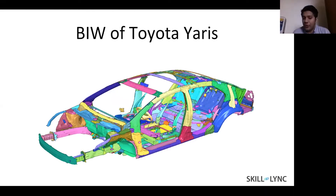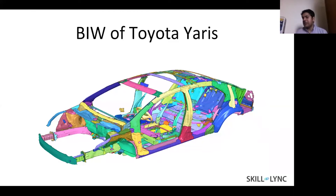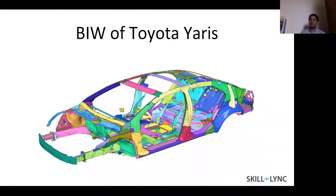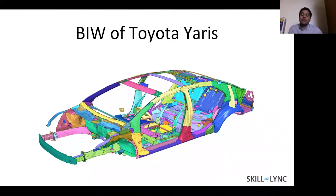The other thing you need to focus on is the BIW of the component you are trying to perform crashworthiness tests on. BIW stands for body in white. What does body in white mean? The sheet metal components — body in white refers to the sheet metal components that basically form the underlying structure of your car.